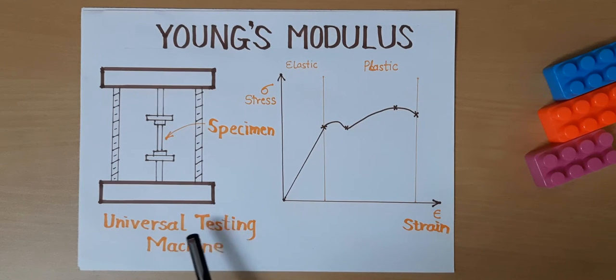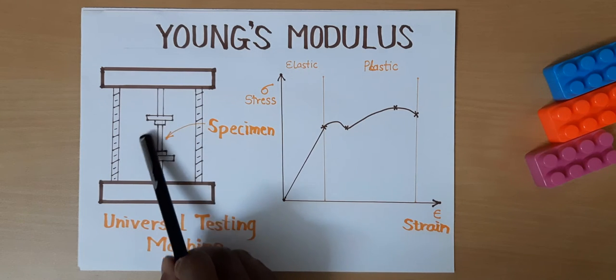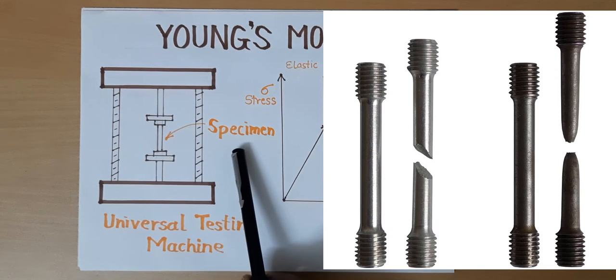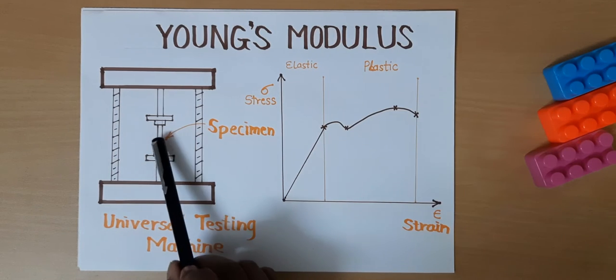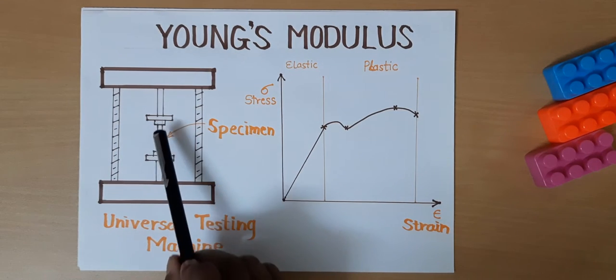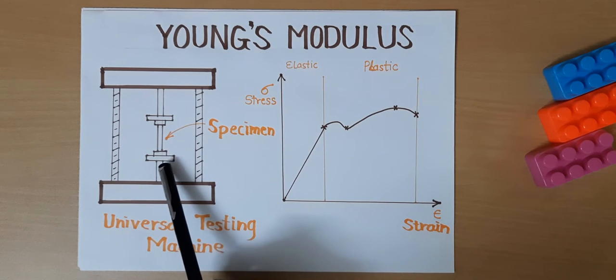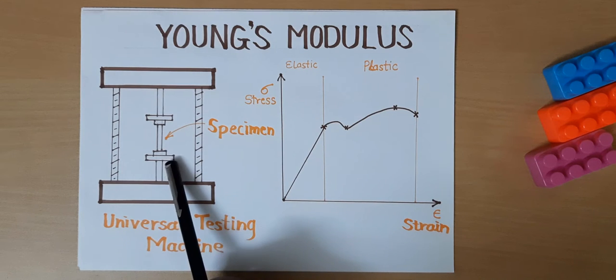In this universal testing machine, a specific dimension specimen has been prepared for that material and is tested. It is attached to both end jaws and gradually force is applied so that it is pulling in both directions.